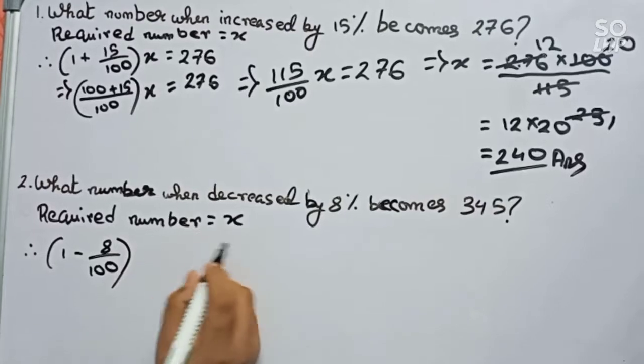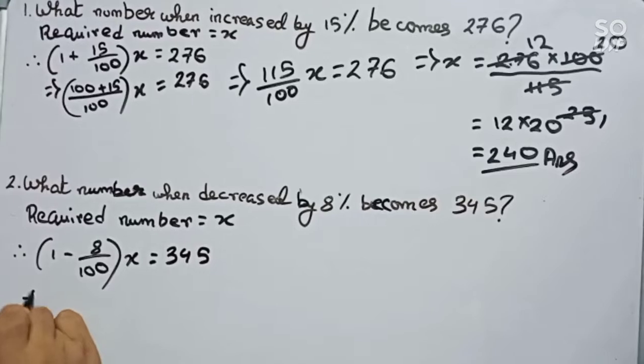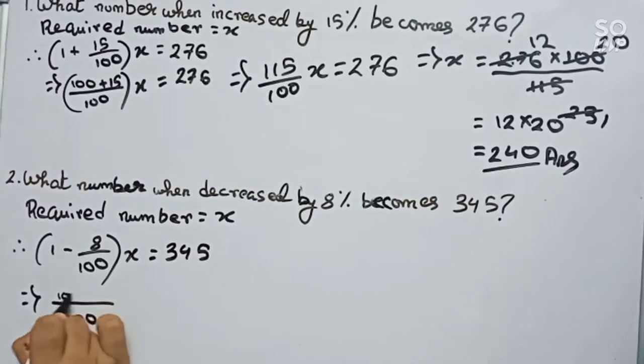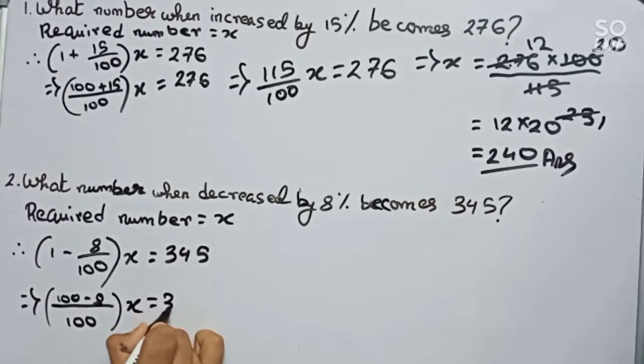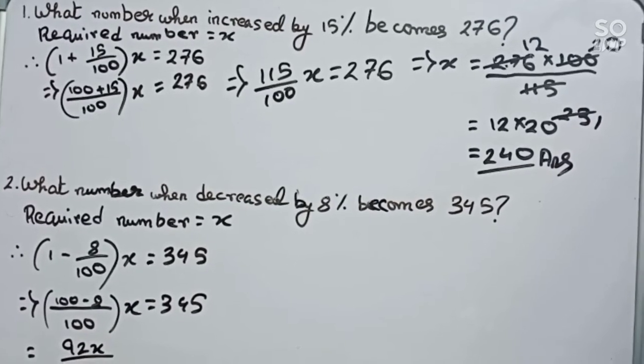It equals to (100 - 8)/100 times x equals to 345, or 92x/100 equals to 345.